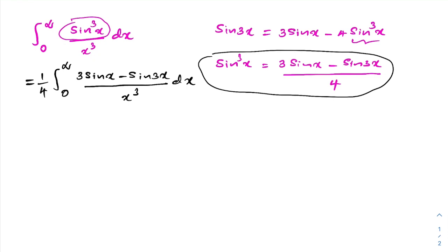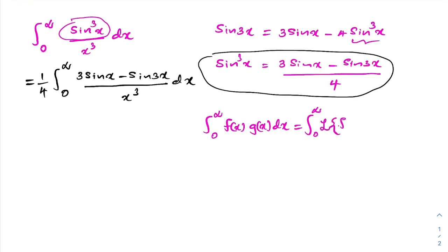Now I am going to use the mass identity of the Laplace transform. I already discussed this identity — if you'd like to watch those videos I will add links in the description and also make a card. The identity states: the integral from 0 to infinity of f(x)·g(x) dx equals the integral from 0 to infinity of the Laplace transform of f(x) times the inverse Laplace transform of g(x) dx.